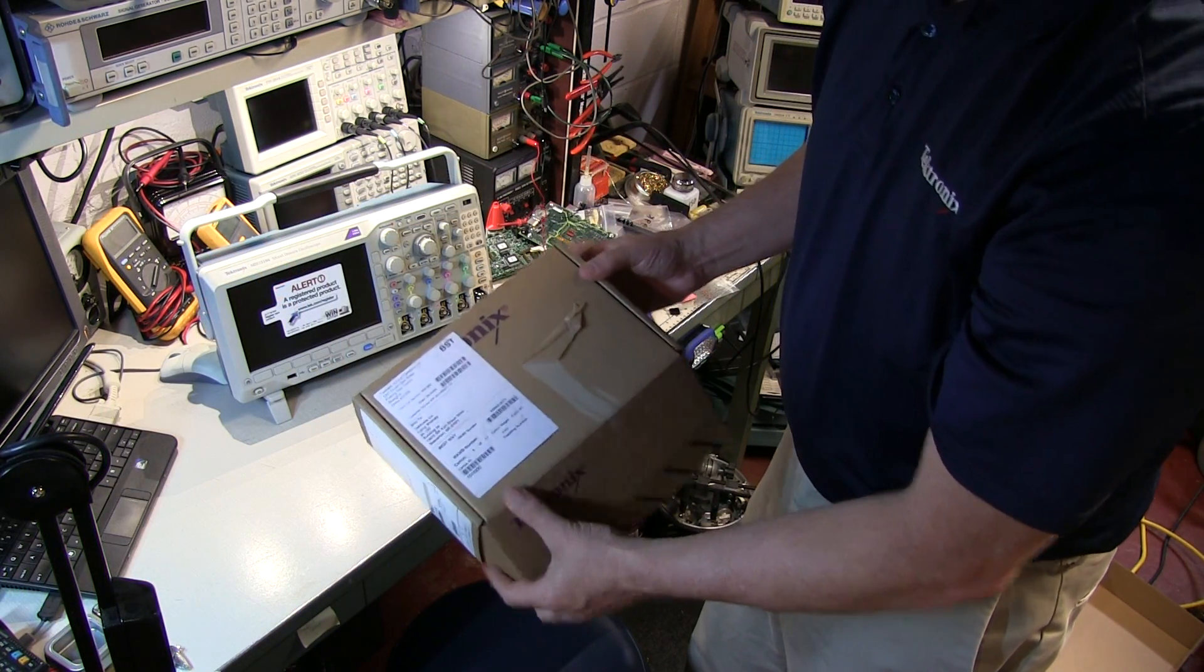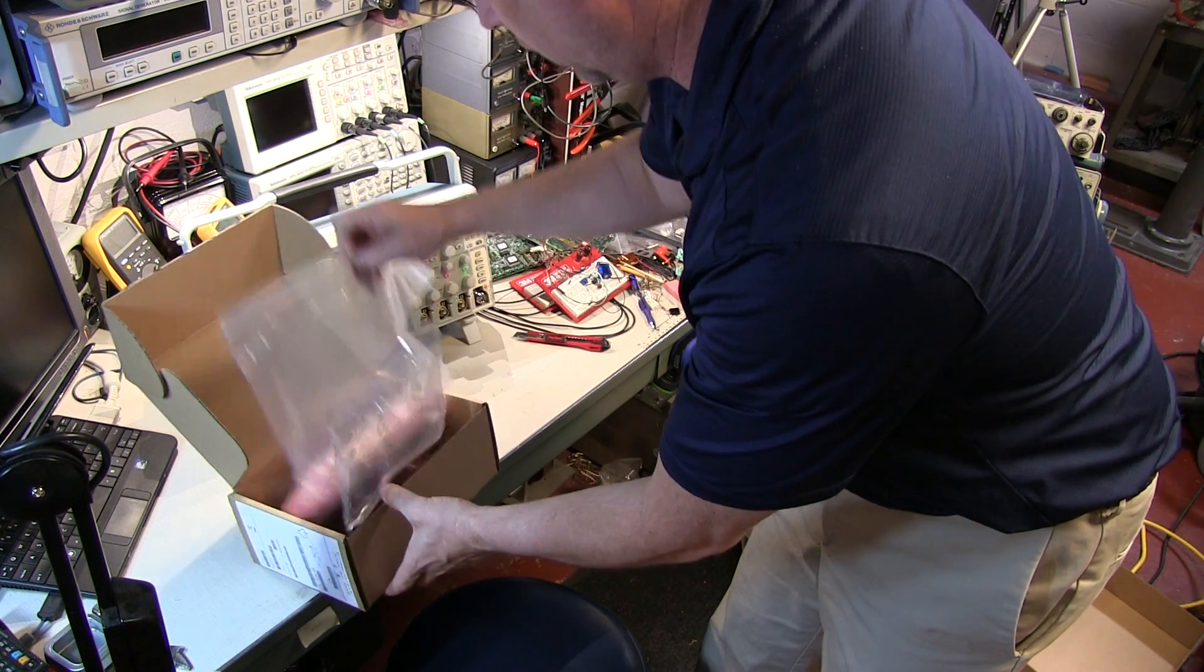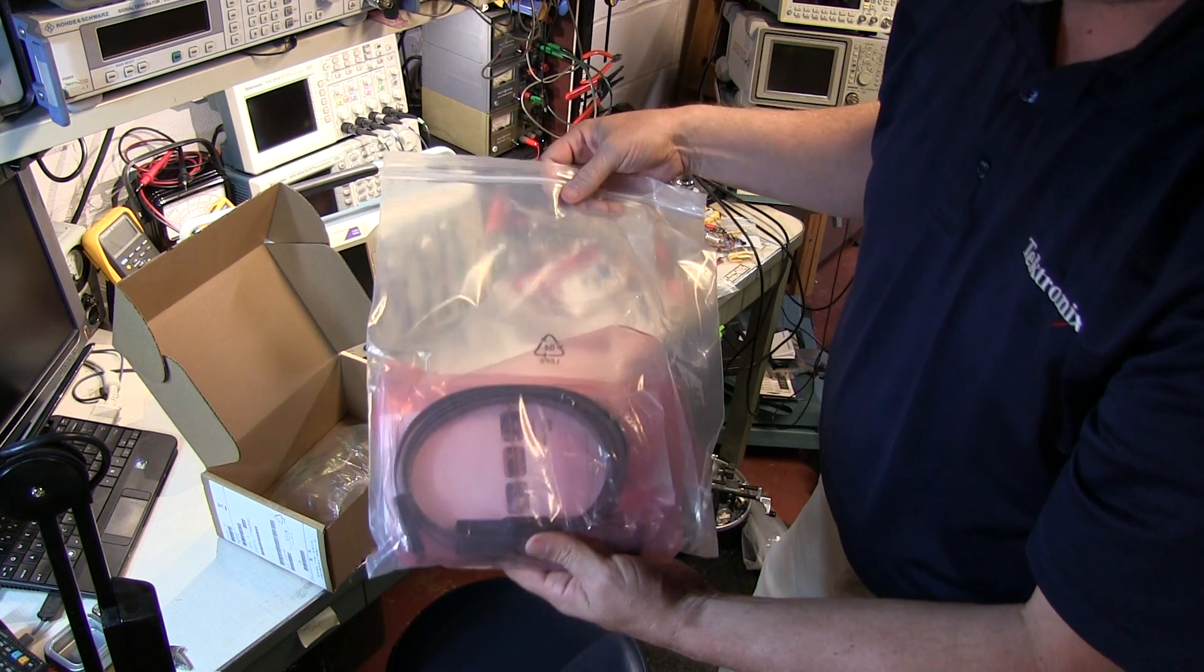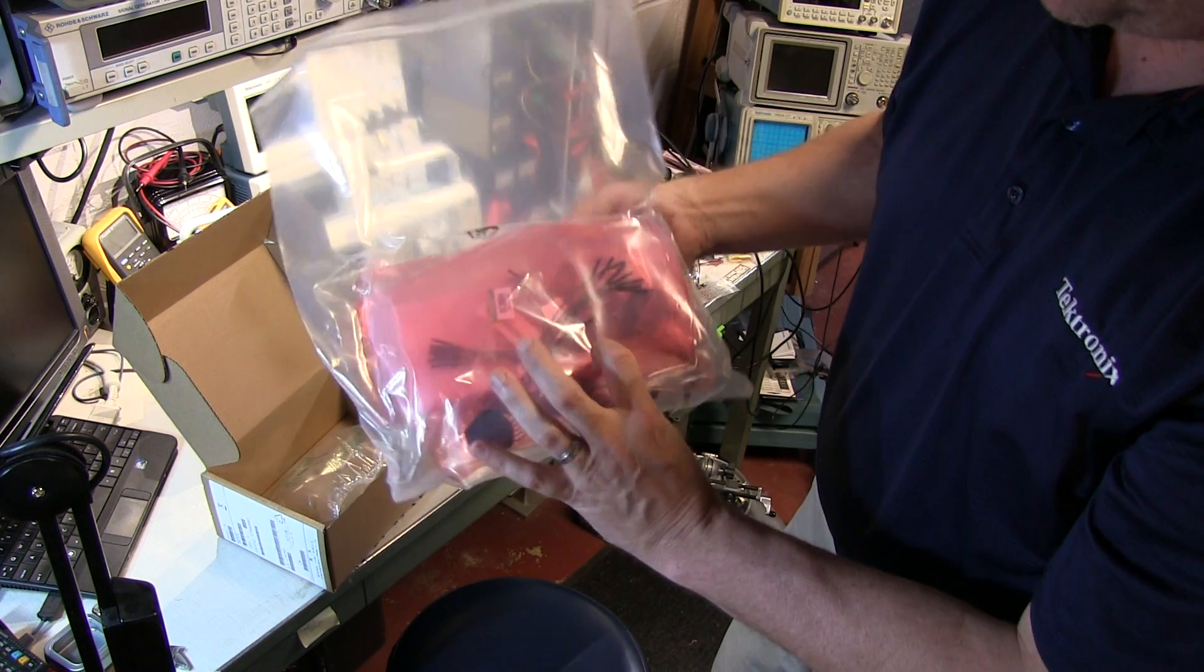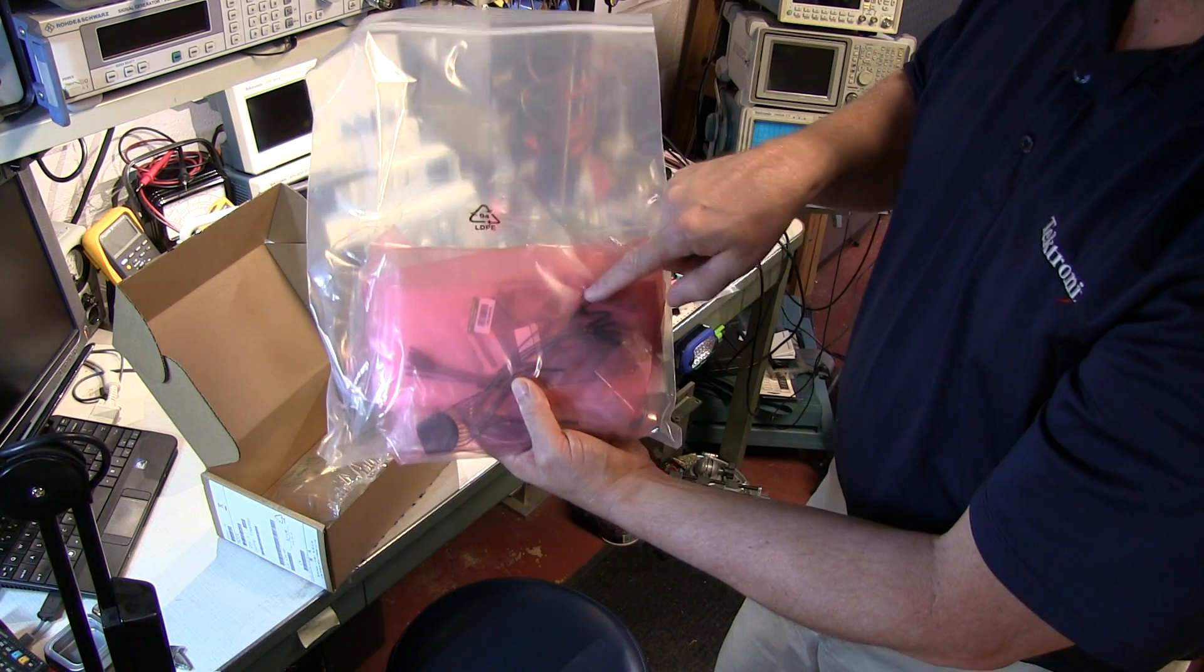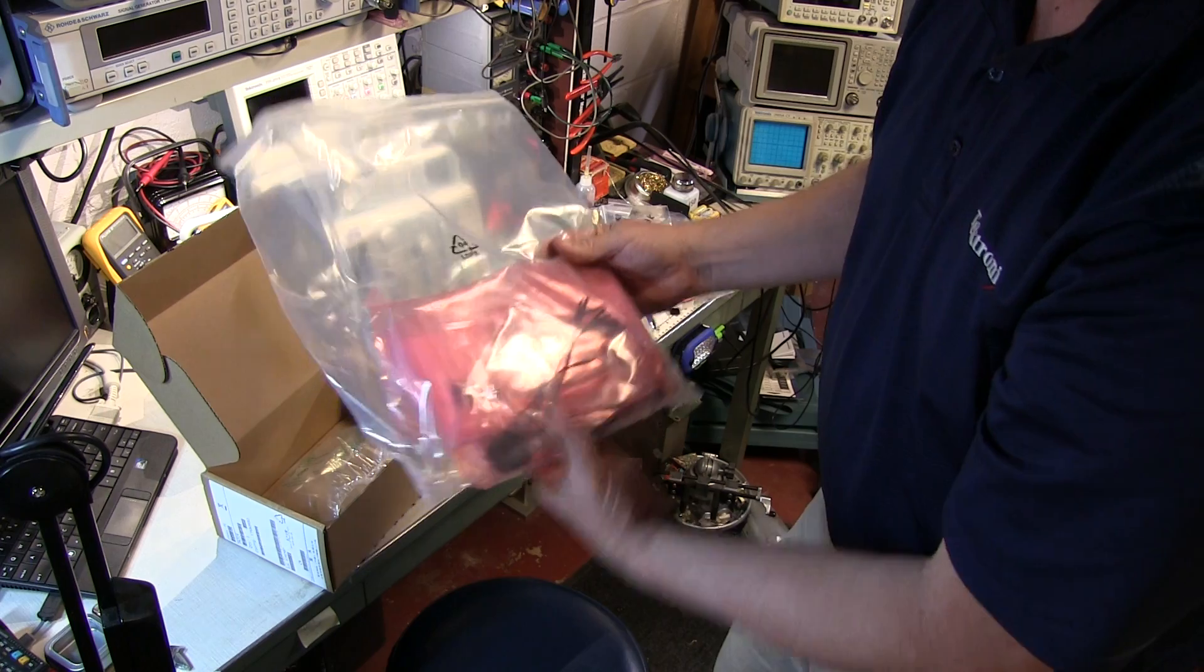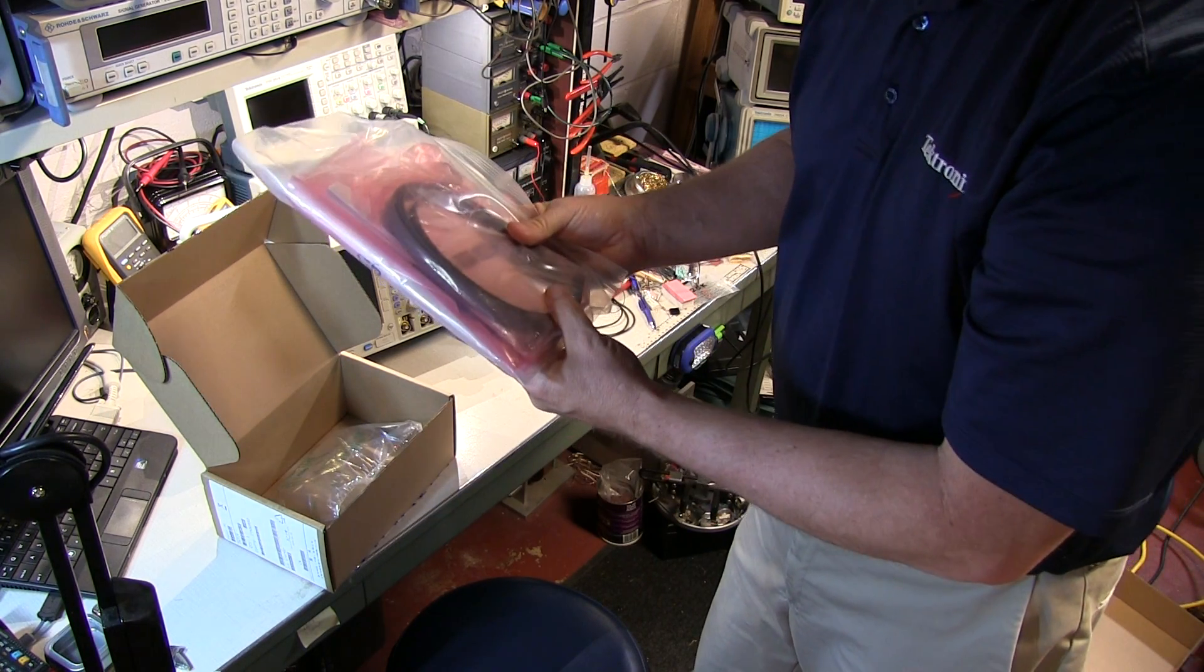Also included in the box was this box here. This contains the digital probe for the mixed signal, the digital inputs of the mixed signal scope. This gives us our 16 digital inputs and all of the various connections to be able to hook into digital circuits, either through square pin headers or mini grabber clips to grab onto circuit elements, component leads and jumpers.